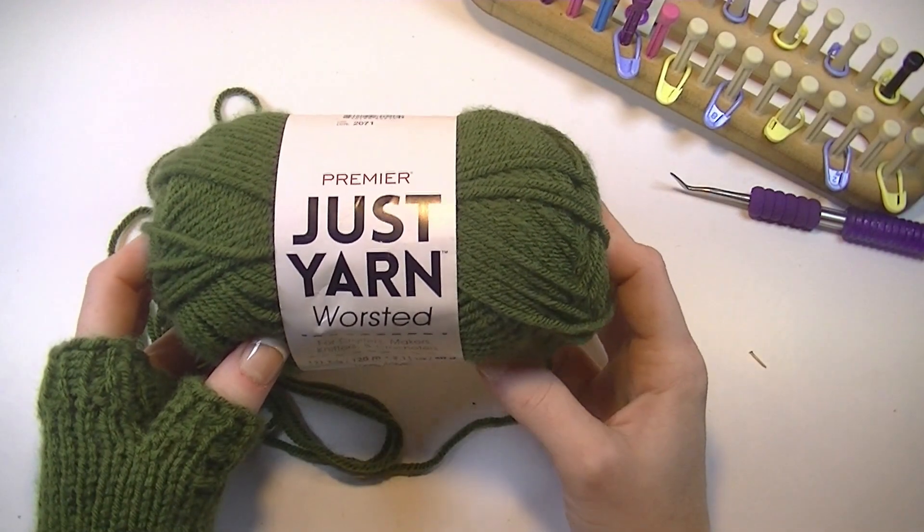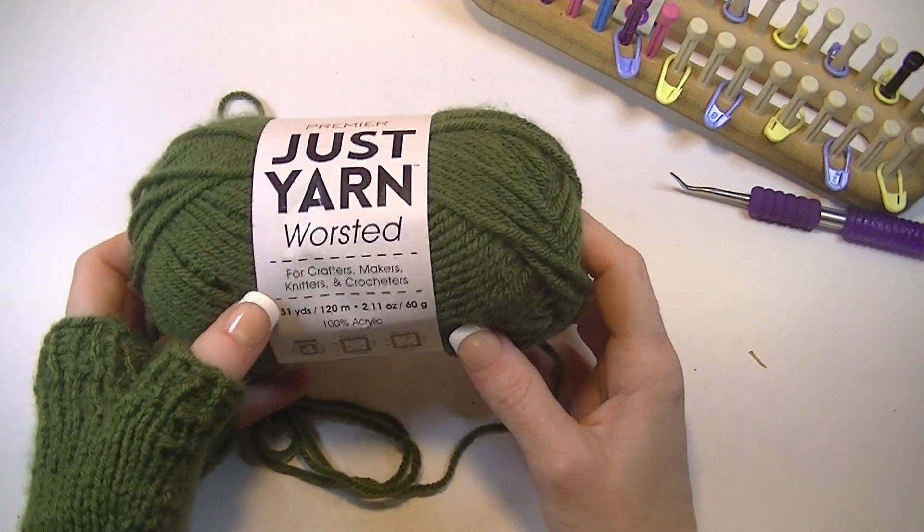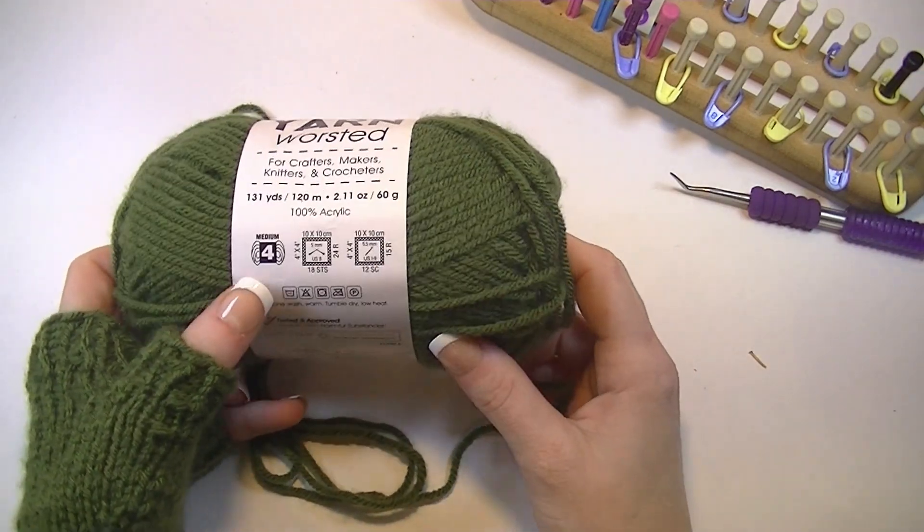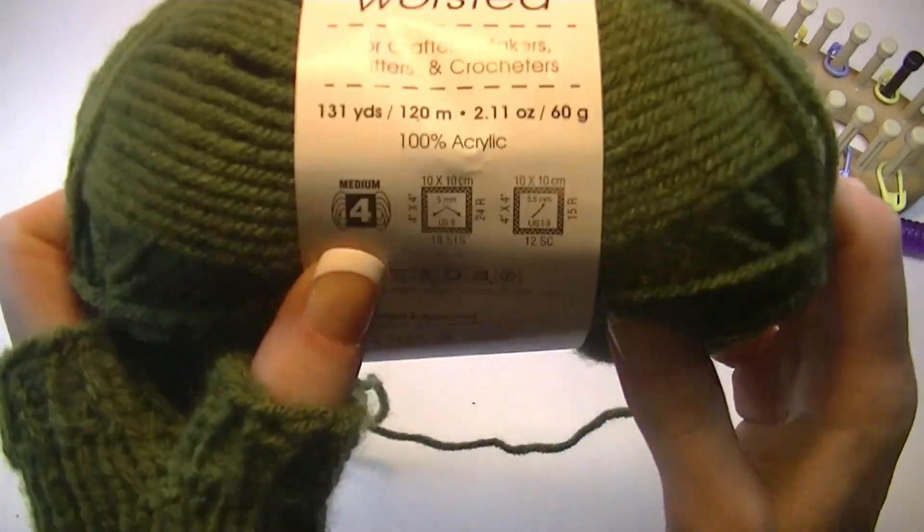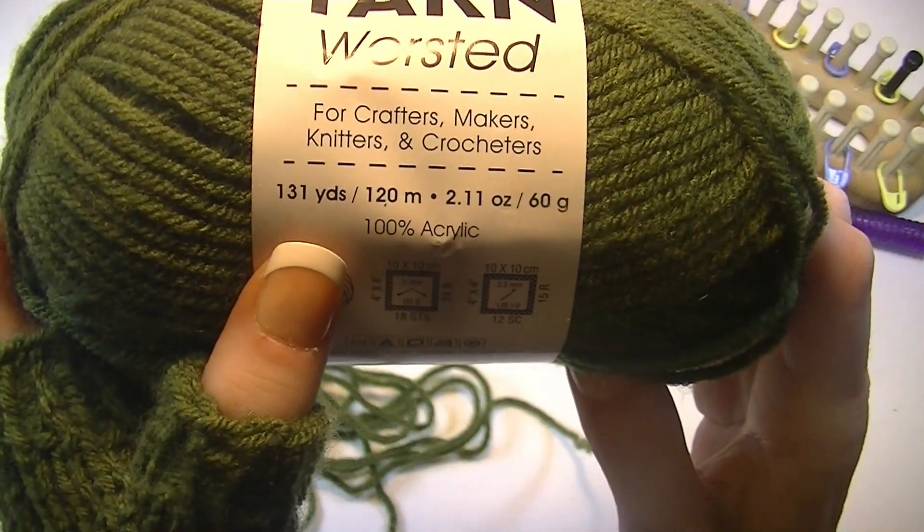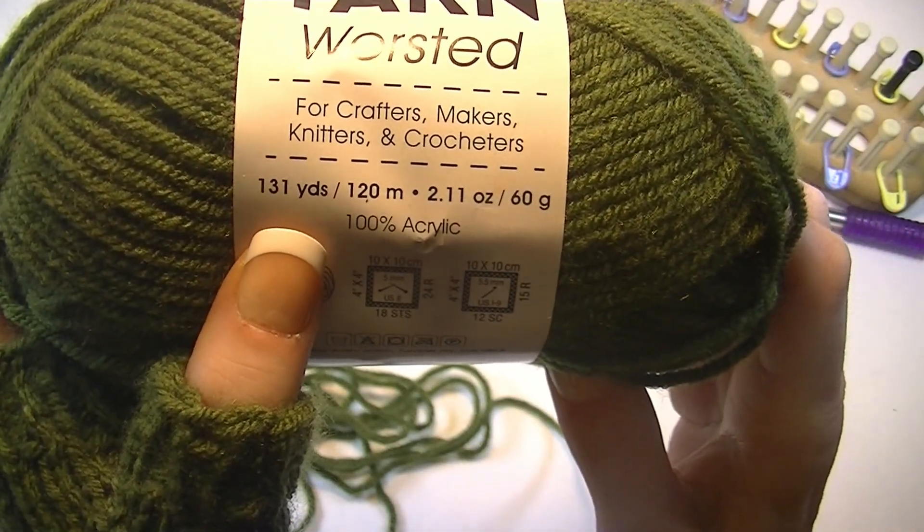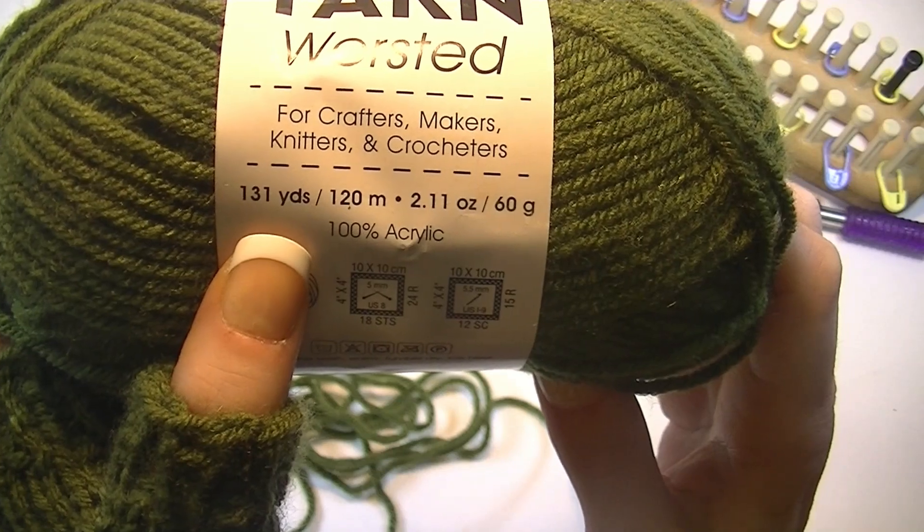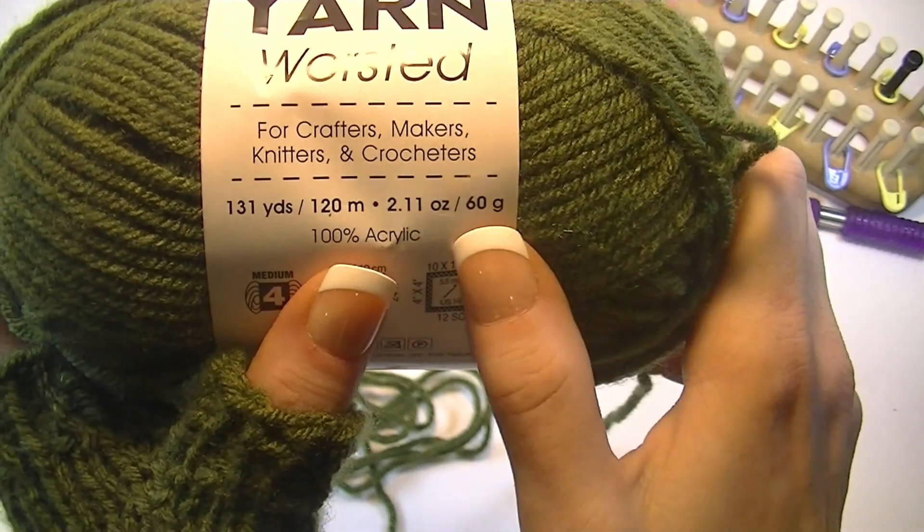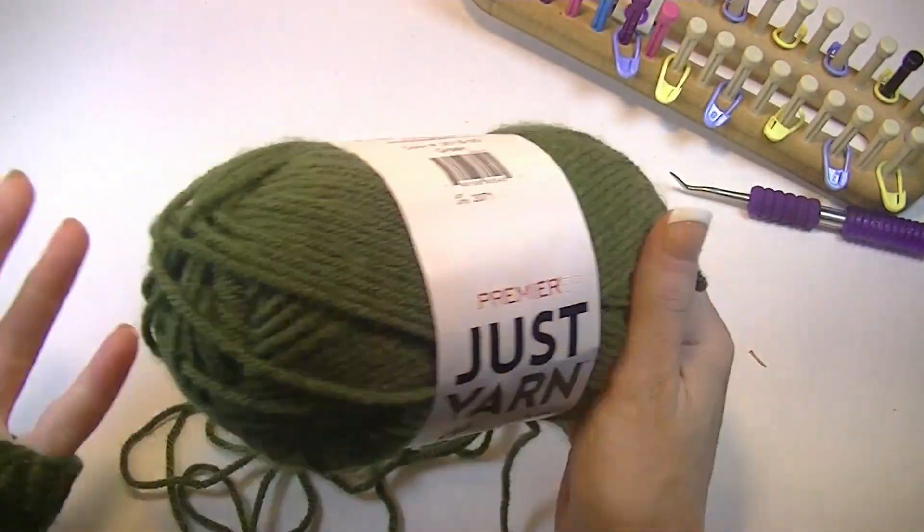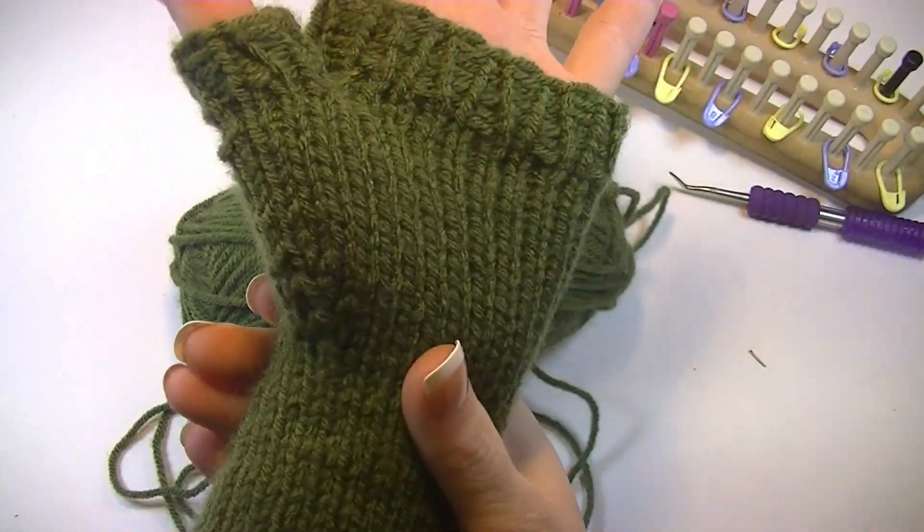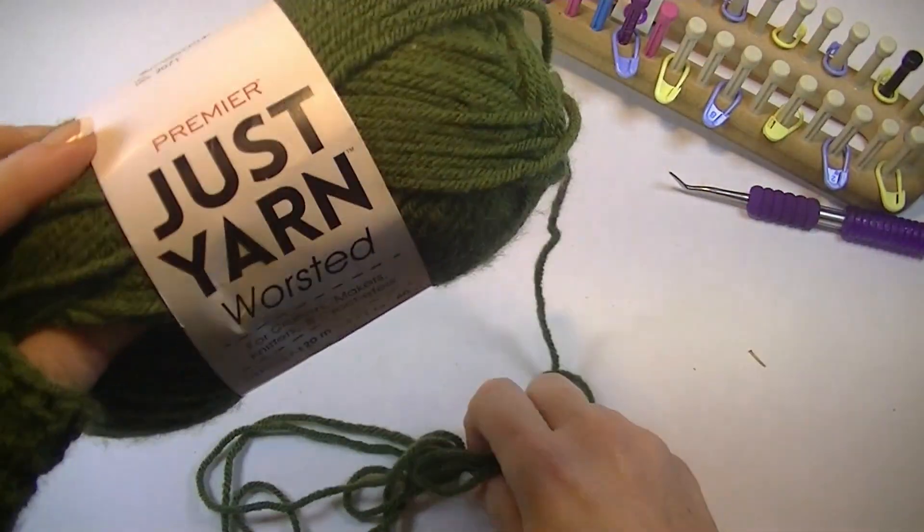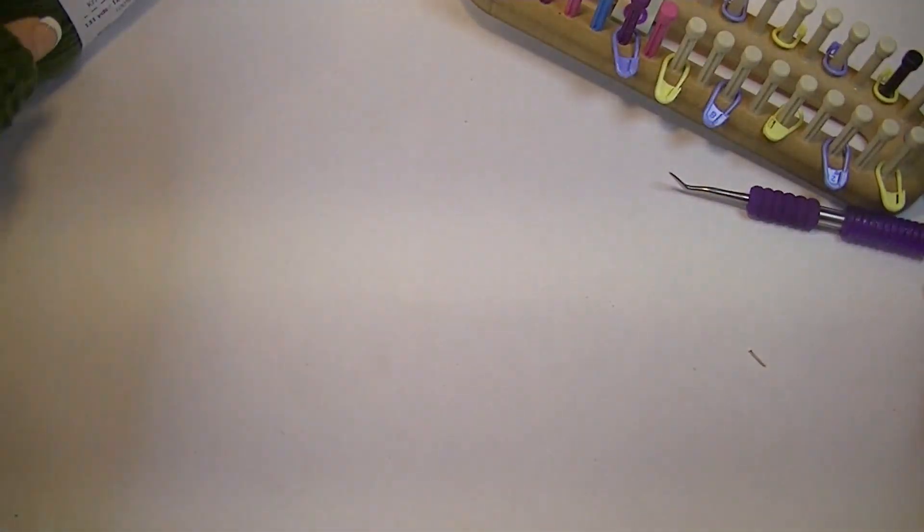I'm using Premier Yarn, just yarn, worsted weight, number four worsted weight. It is acrylic. It comes with 131 yards. It is a 60-gram ball. I actually really like the way it's working up, and I found it at my local Dollar Tree, so very good price on that.